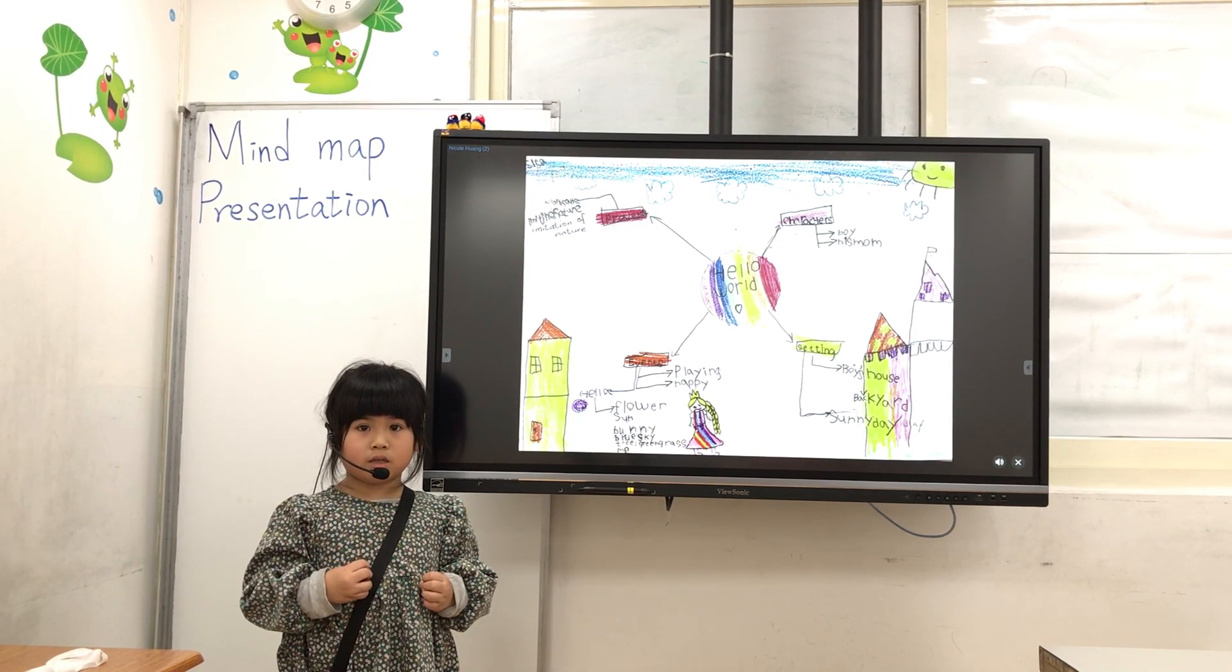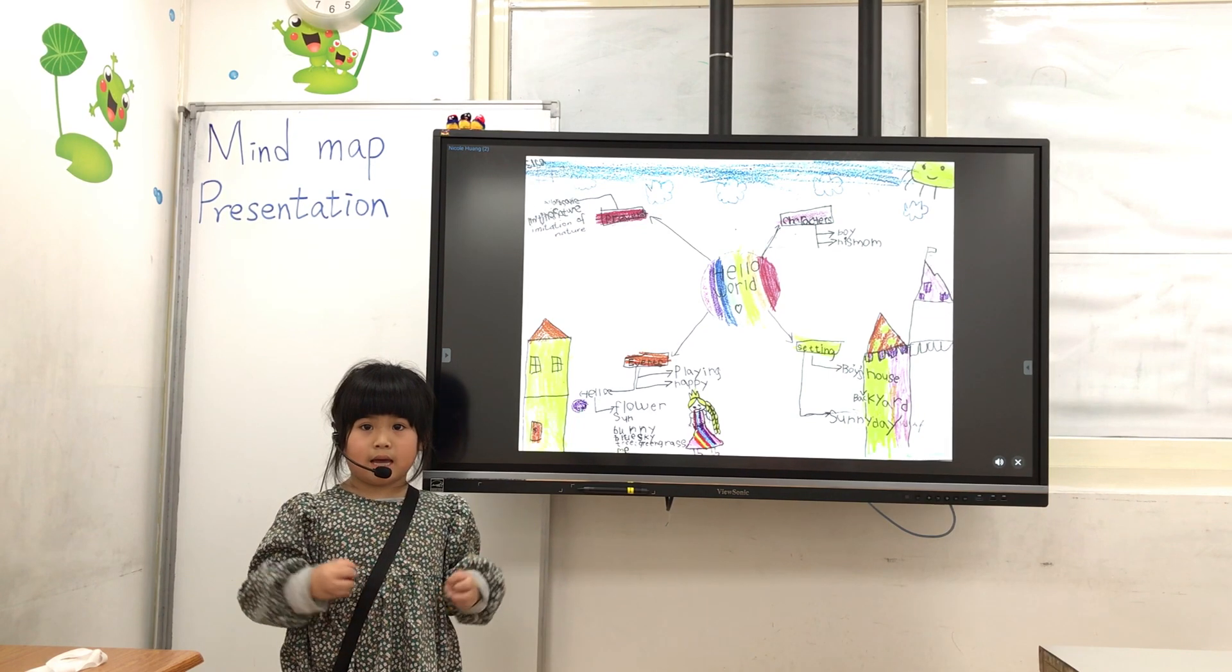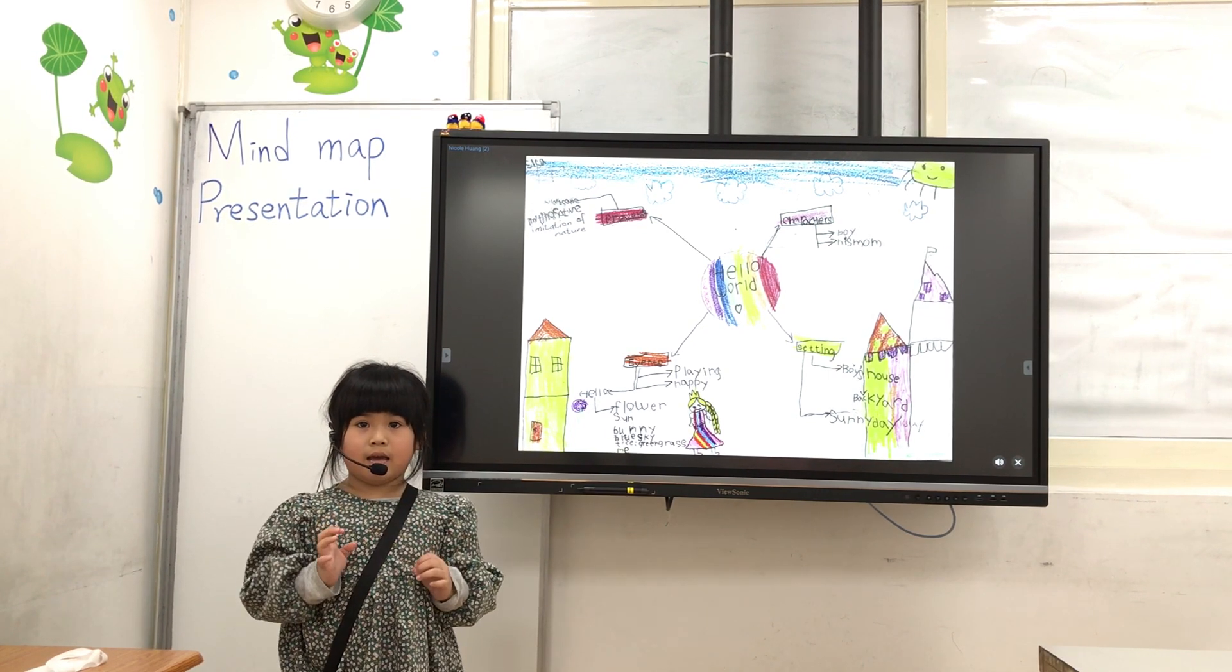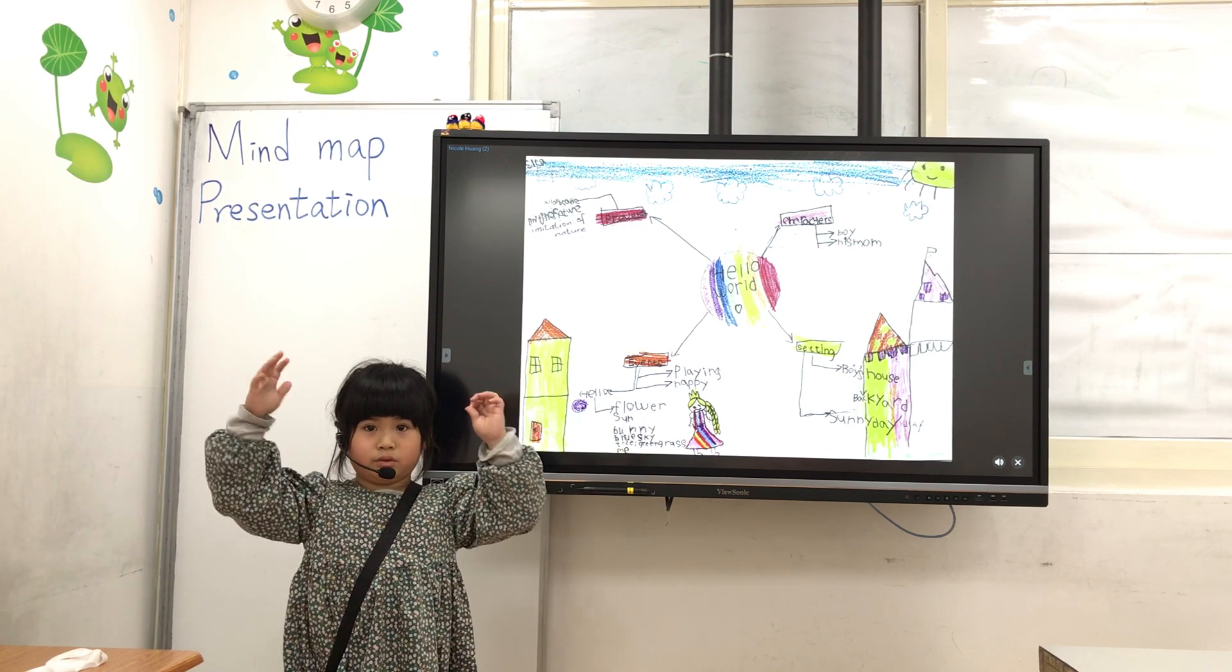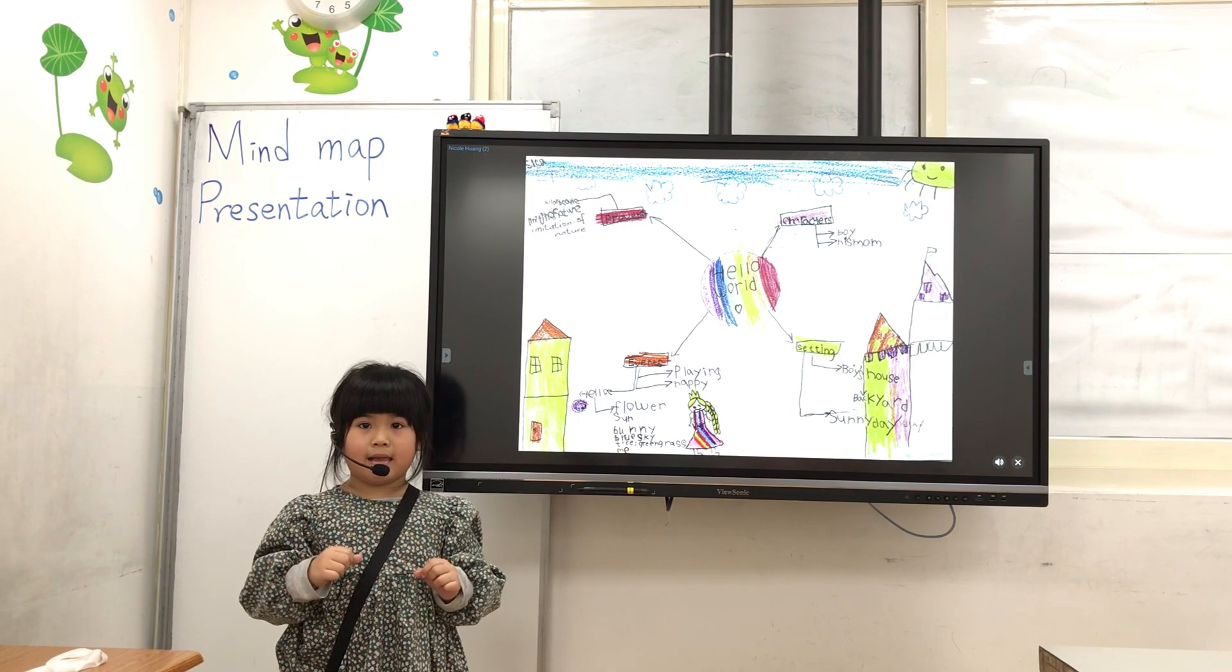The boy is playing, he is greeting everyone. He says hello flower, hello sun, hello bunny, hello fly, hello blue sky, hello tree, hello blue ground, and hello me.